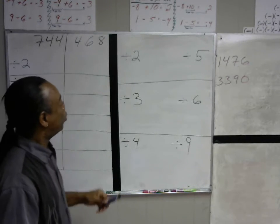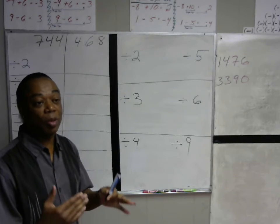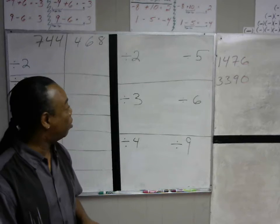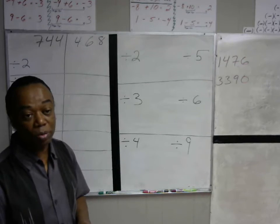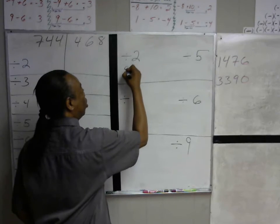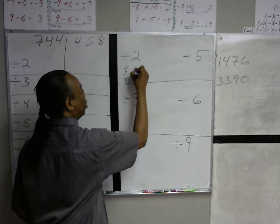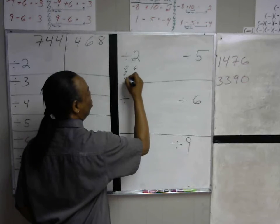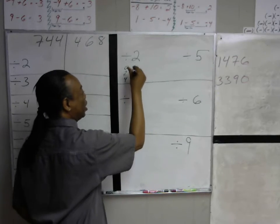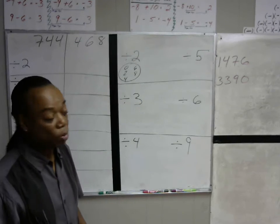For something to be divisible by 2, the number simply needs to end in the two times tables. So it either needs to end in a 0, 2, 4, 6, or 8. If it ends in any of these numbers, it's divisible by 2.